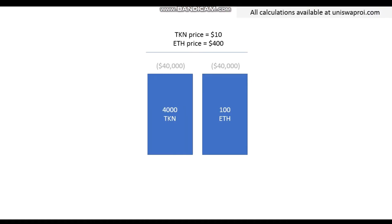Let's start with a real case scenario. The numbers will be a little extreme — minus 90% is extreme, but you never know with all these tokens coming out. I just want you to understand what you're doing when you're investing in Uniswap. So there is a token/Ethereum pool. The token price in US dollars is $10, Ethereum price is $400. In this pool, let's say it's seeded with 4,000 tokens and 100 Ethereum.